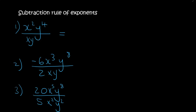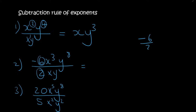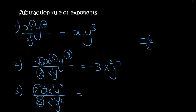Here are some practice examples. For the x's, subtract the exponents and that just becomes x. For the y's, subtract the exponents and that just becomes y³. The 6 and the 2 are normal numbers, so type negative 6 divided by 2 into your calculator — that gives you negative 3. Then 3 minus 1 is 2, and for the y's it's 8 minus 1 which becomes y⁷. For the next one, 20 divided by 5 is 4, then 5 minus 2 gives x³, and 8 minus 2 gives y⁶.